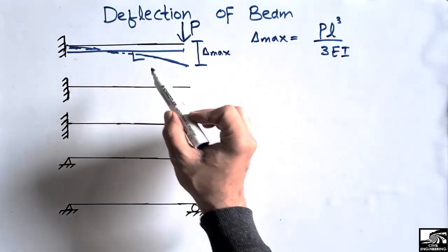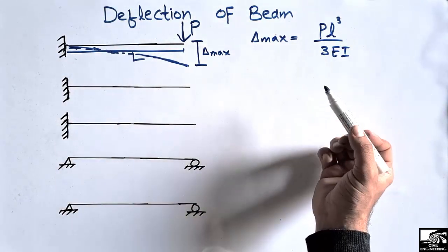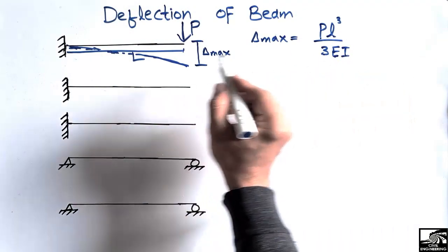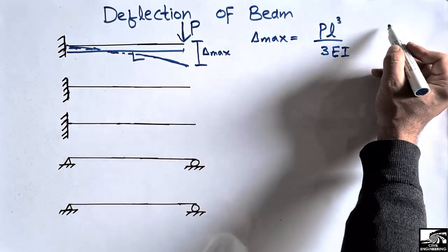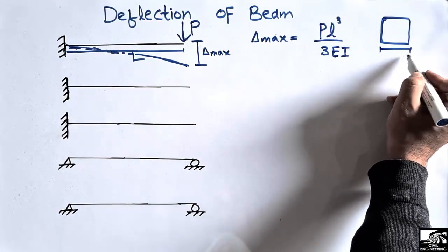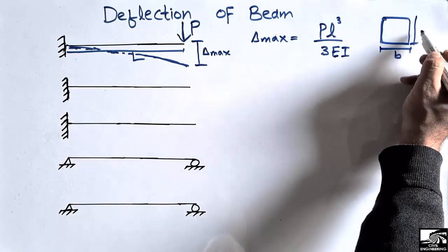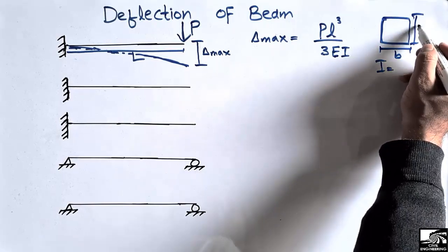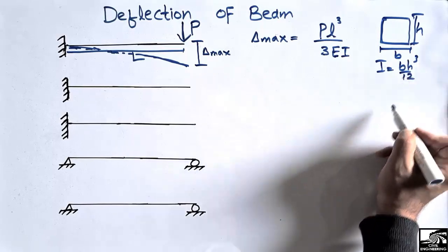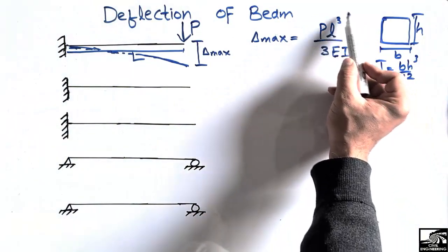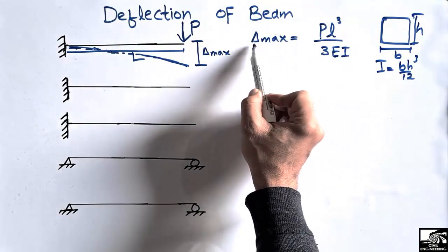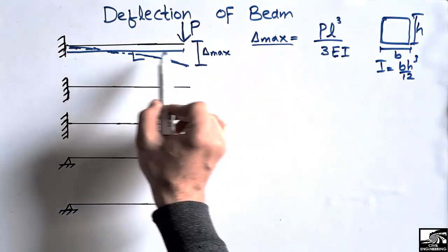The factor 3 is a constant in the formula. E is the modulus of elasticity of the beam material — whether it is a steel beam or a concrete beam, we use the appropriate value. I is the moment of inertia of the beam's cross-section. If the beam is rectangular with width B and height H, then the moment of inertia is I = BH³ / 12. By finding all these values and substituting into the formula, we can find the maximum deflection of the cantilever beam.